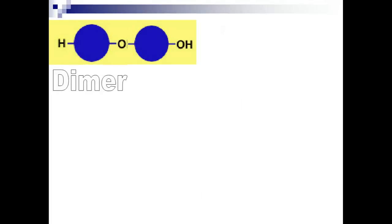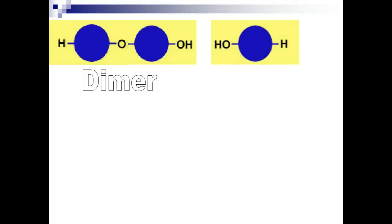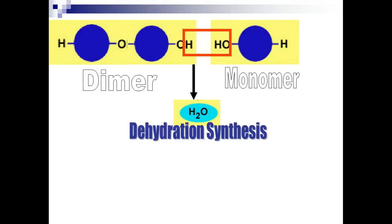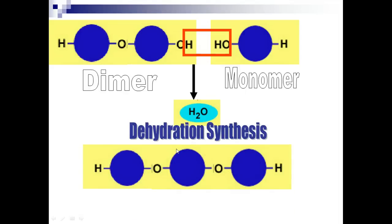If we add another monomer to our dimer, we take out another water molecule through another dehydration reaction. If this continues over and over again — hundreds of these molecules long — we've got what we call a polymer. This could be starch, glycogen, cellulose, fat molecules, or proteins — it's the same process in all of them.